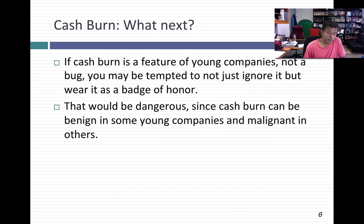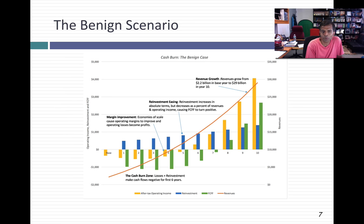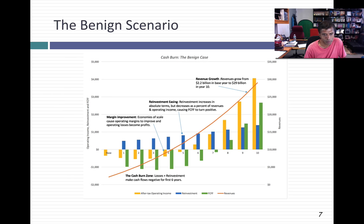Cash burn can be good, bad, or neutral. I'd like to talk about when cash burn is benign and what it looks like when it's malignant. For the benign example, I'm going to use my valuation of Uber in August 2016 — a pretty optimistic, benign valuation where I assume Uber is going to grow, become more profitable, and be a successful firm over time — and show you what cash flows look like when you assume health.